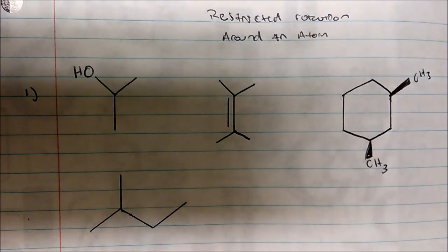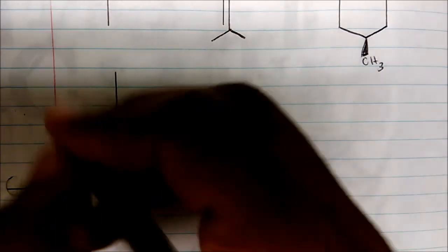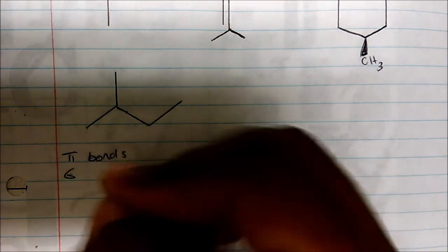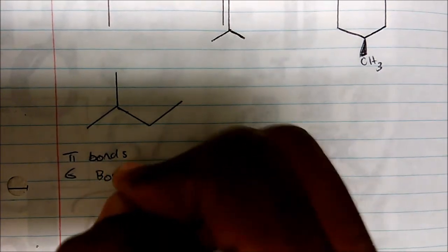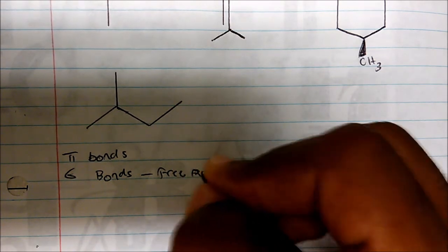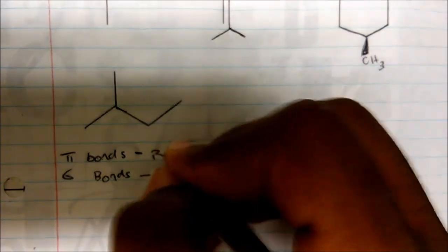Well, the things I want you to consider is pi bonds and sigma bonds. Sigma bonds have free rotation around the atom. Pi bonds, these are restricted.